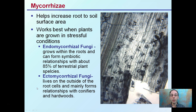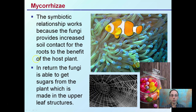Ectomycorrhizal fungi live on the outside of root cells, and they're mainly associated with conifers and other hardwoods. Remember that cannabis is an annual, so you want to be focusing on the endomycorrhizal. Your tomatoes, squash, and pepper plants can also associate with endomycorrhizal fungi.